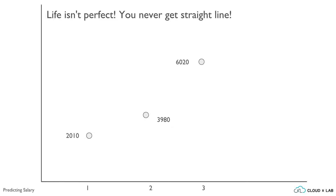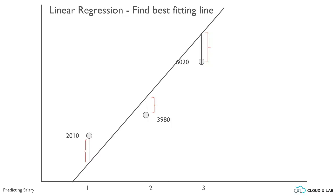Say if the salaries for the three years were 2010, 3980, and 6020 — can we draw a straight line that passes through all the points? No, we can't. So what do we do in this case? How do we figure out the salary for the fourth year? The first strategy is to come up with a straight line that is closest to all the points. This approach is known as linear regression.